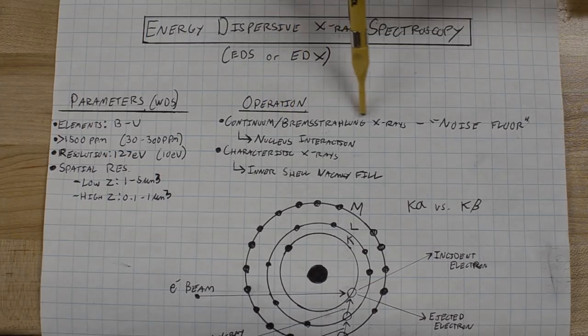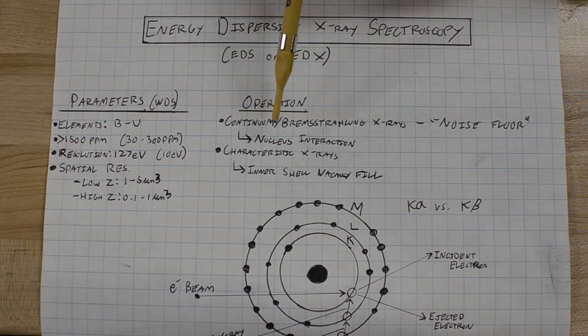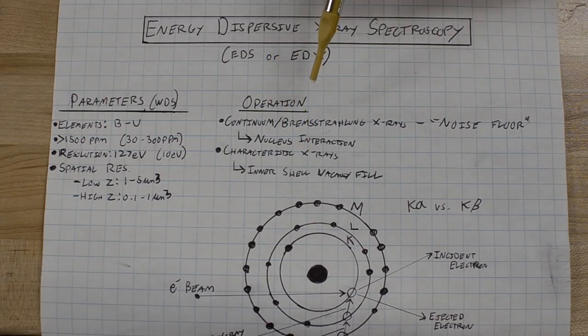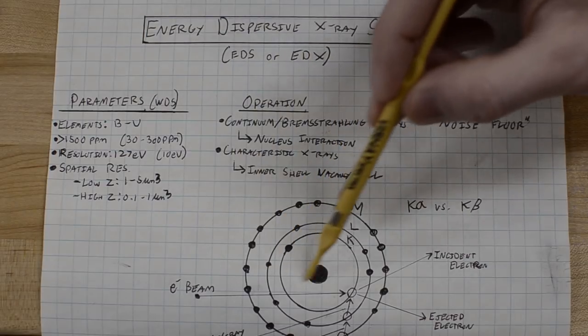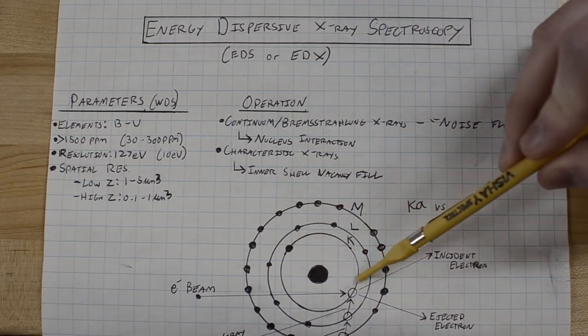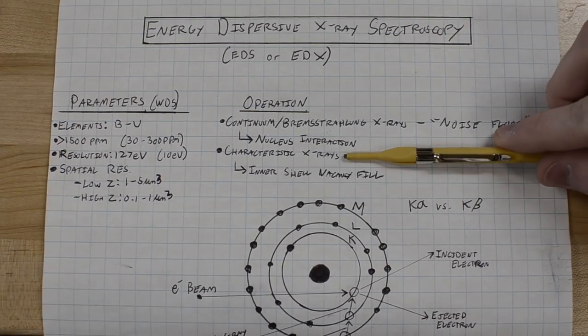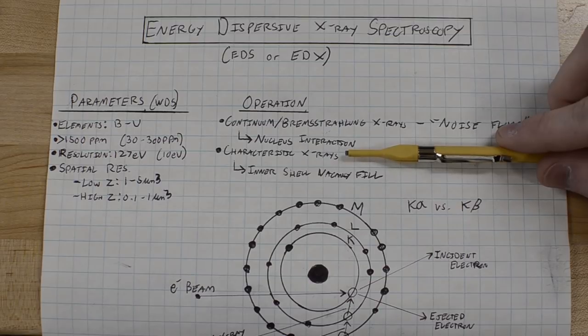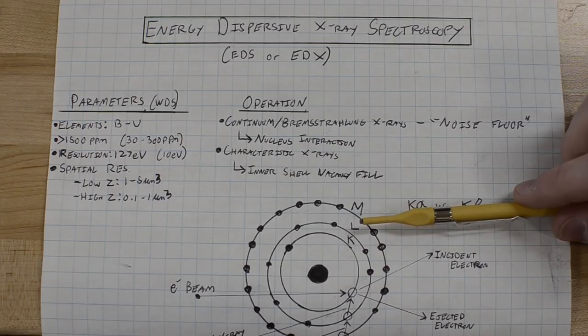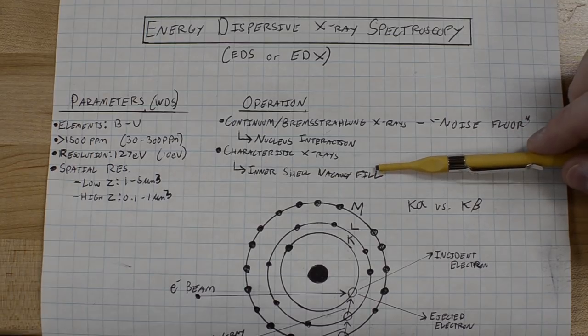When the incident beam interacts with the nucleus, the coulombic force of the nucleus will actually change the trajectory of the electron beam and slow it down. It will kind of get bent around the dense nucleus, and the amount of kinetic energy lost from that electron being slowed down is given off as a continuum X-ray. The kind of X-ray that's actually important are the characteristic X-rays. These are generated by inner shell vacancies filled by outer shell electrons.